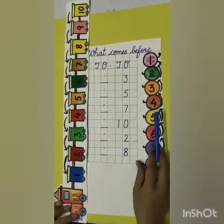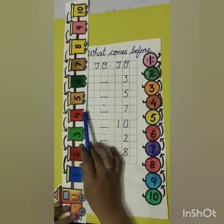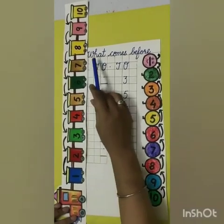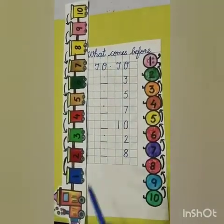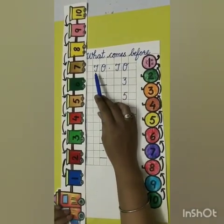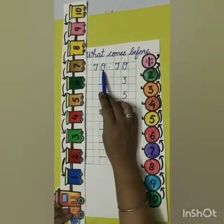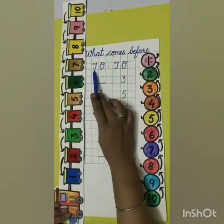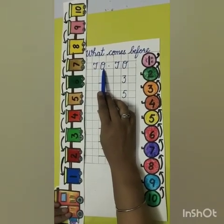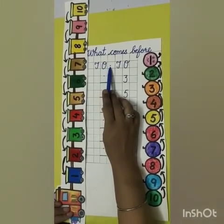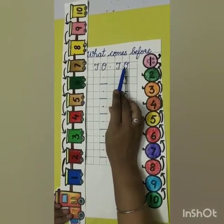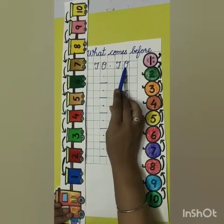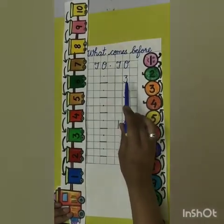Shall we move ahead? Let's do some exercise on what comes before. Are you ready kids? Here I have written T-O. T stands for tens, O stands for ones.